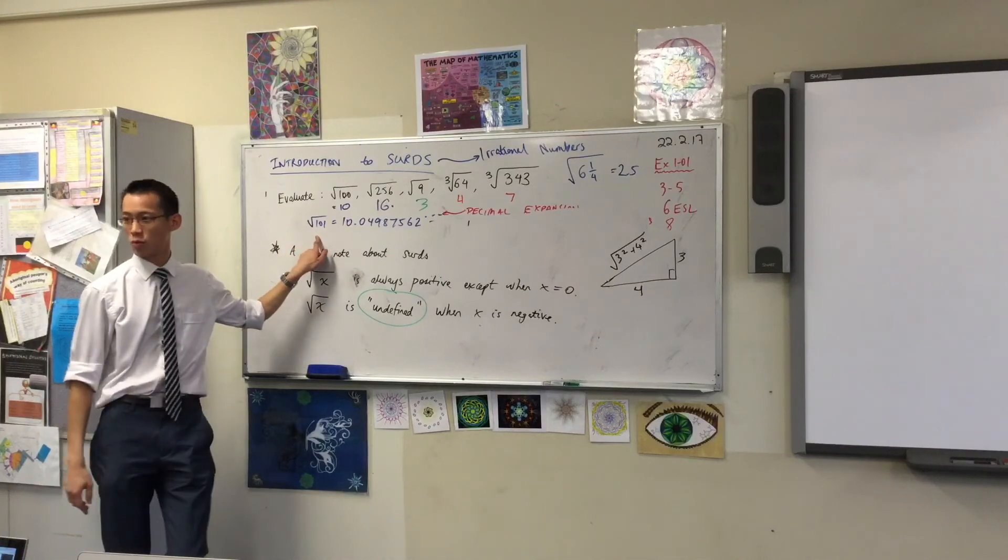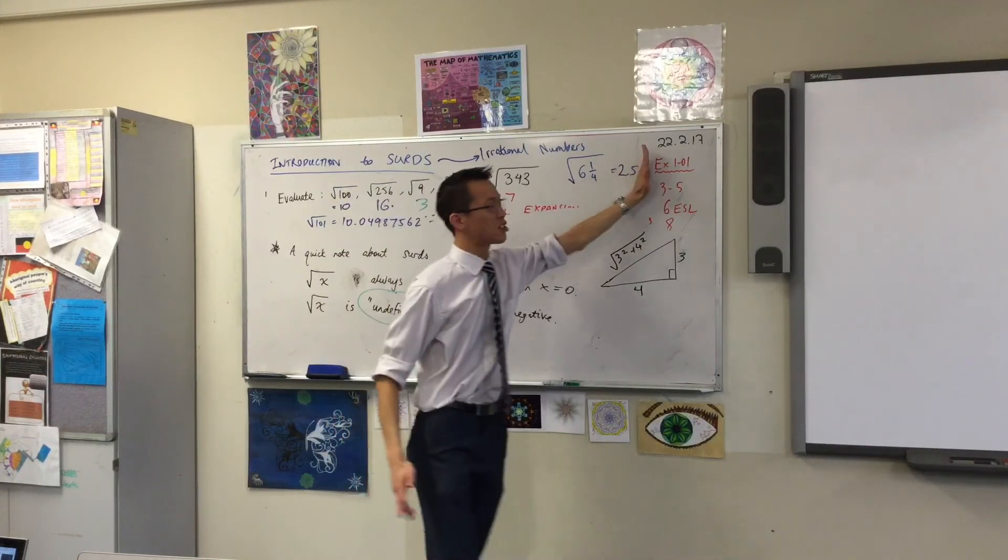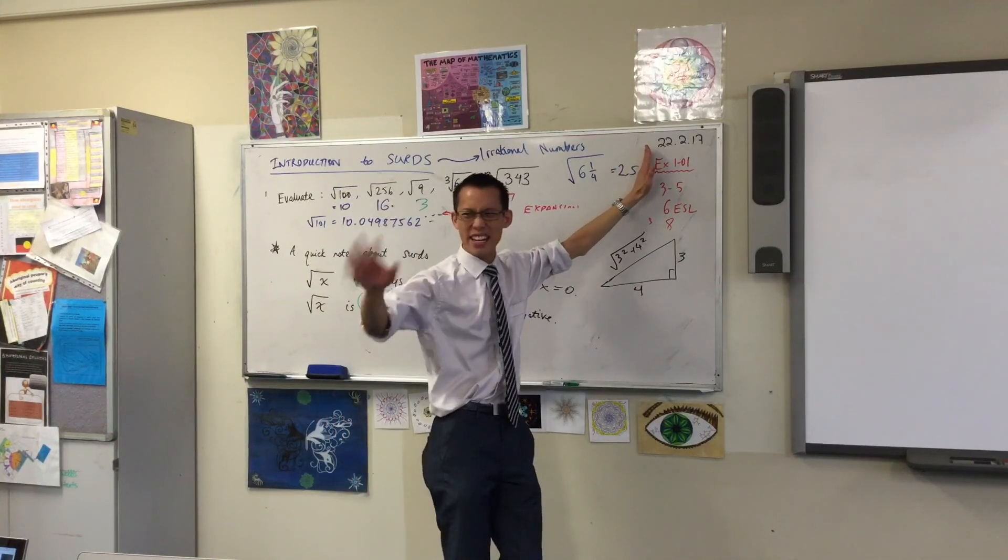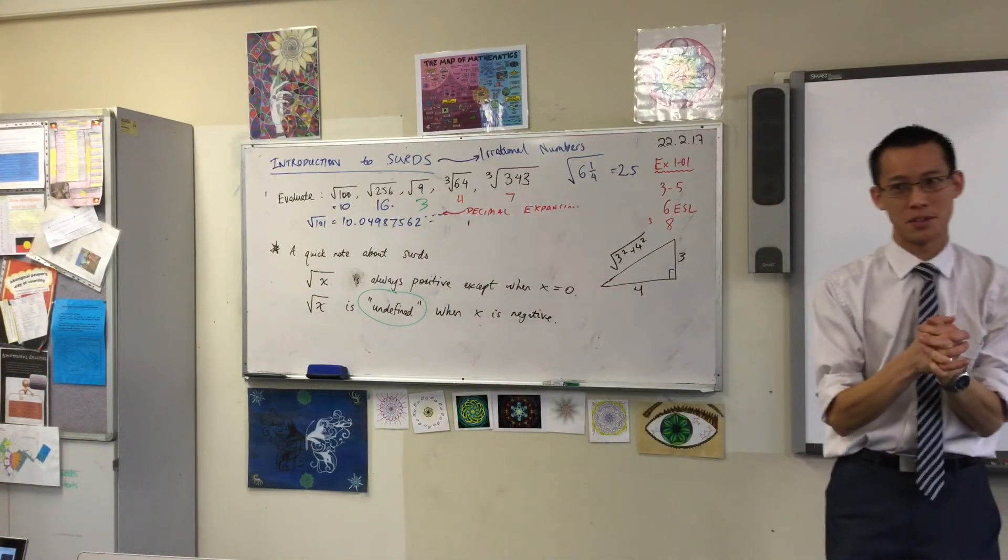See, all the rest of these guys, why aren't they surds? Again, because they stop. All right, so they're regular numbers you knew before: whole numbers, fractions, they're fine. We're interested in these really weird special ones.